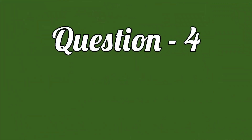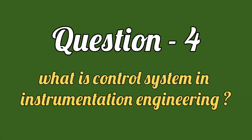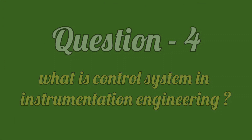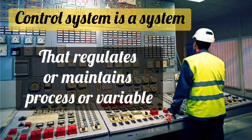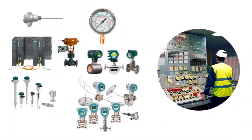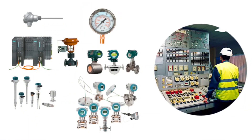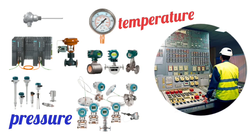Let's see the next question: What is a control system in instrumentation engineering? A control system is a system that regulates or maintains the process of a variable. In instrumentation engineering, control systems use sensors, transducers, and other components to regulate physical quantities such as temperature, pressure, and flow.